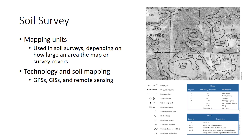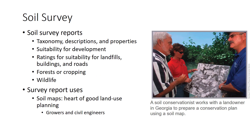GIS software can then integrate all the data and generate a variety of reports and maps. A completed soil map becomes part of a soil survey report, typically for a county. A soil survey report has four major parts: a set of soil maps, map legends that explain the map symbols, descriptions of the soils, and use and management reports for each soil.